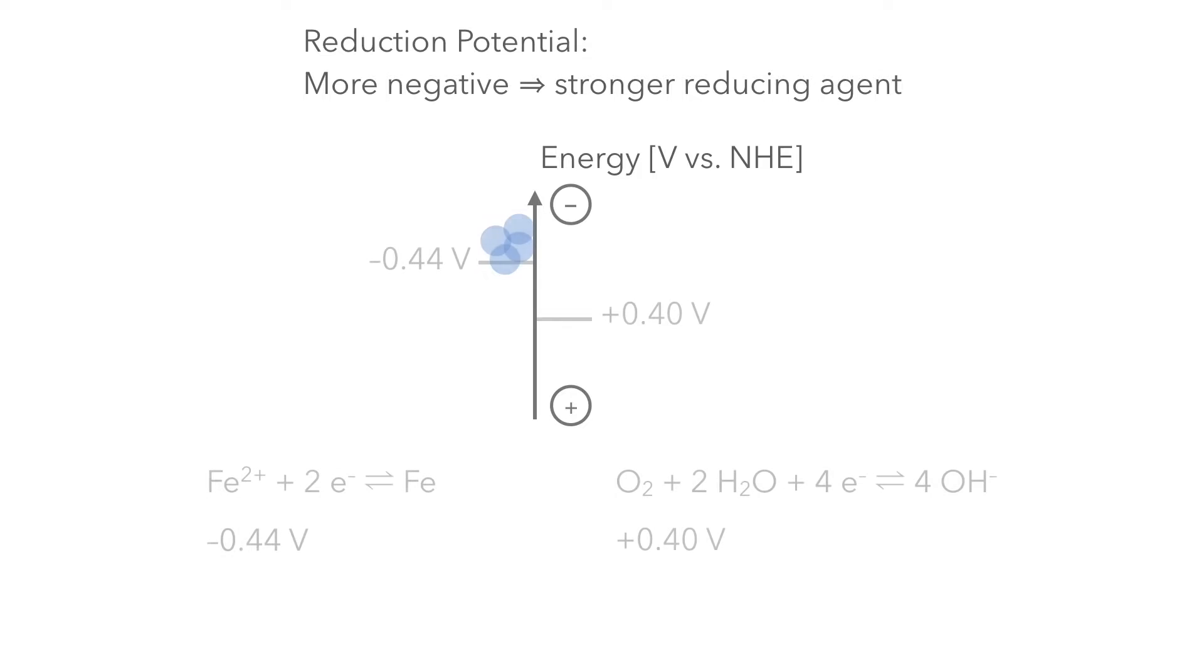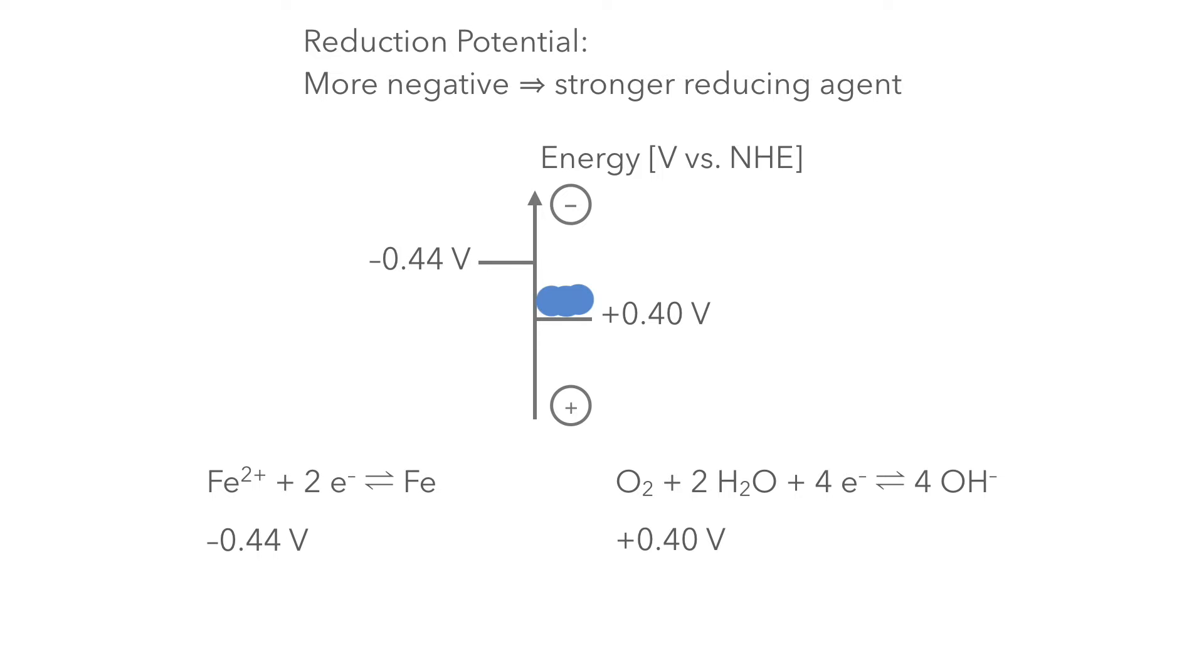Let's assume we have these two half reactions. They both have a certain reduction potential. We put the more negative potential higher on the energy diagram. When we leave this system entirely up to itself, the electrons tend to flow downhill in energy. The iron gets oxidized and the electrons flow towards the oxygen.